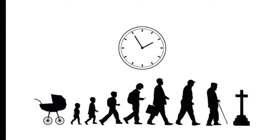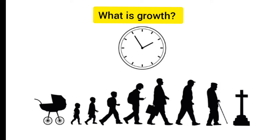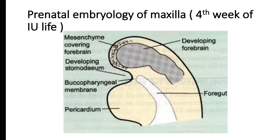As you can see in the picture, there is no universally accepted definition of growth. Growth can be increase in size, increase in proportion, or we can say growth is a progressive complexity. With prenatal embryology of maxilla, this process occurs around the fourth week of intrauterine life.